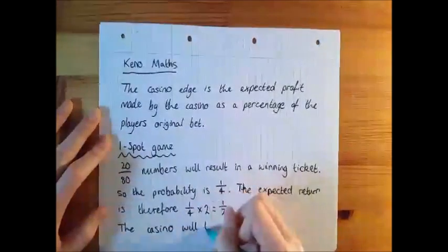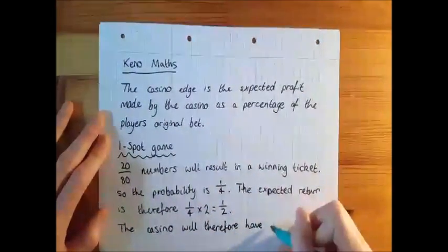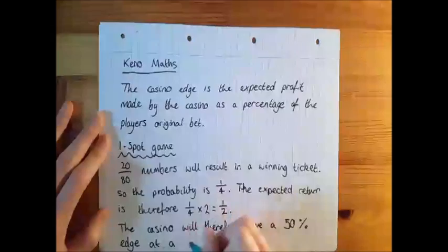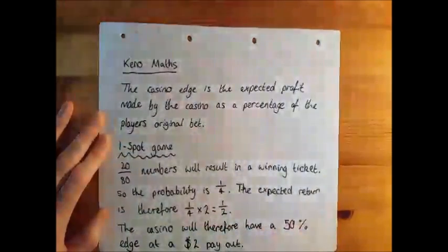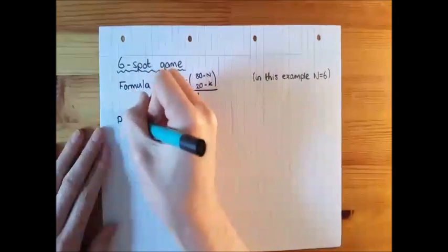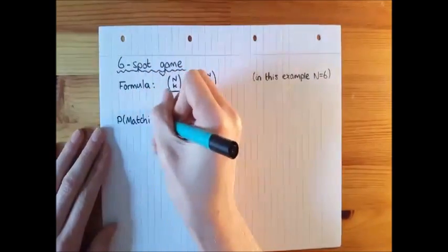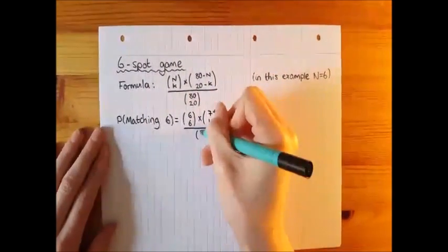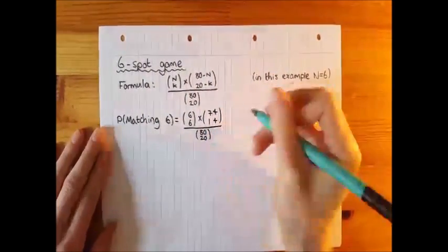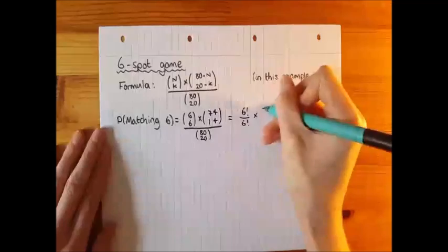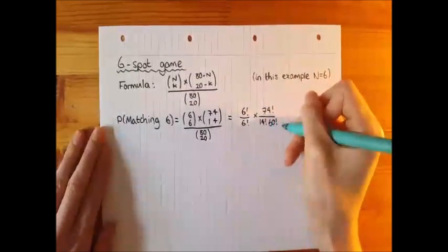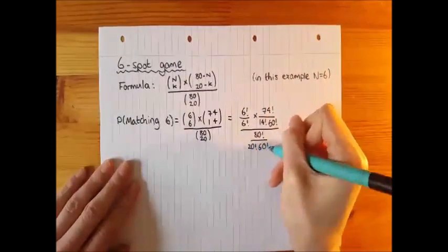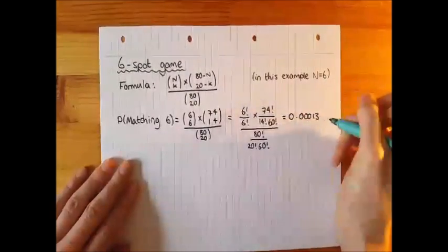For the sake of time, I will skip to a six-spot game to show you how much the odds of winning decrease. From an N-spot game, there is N choose K times 80 minus N choose 20 minus K ways to choose winning numbers, where K is the number of matches. As the computer can draw 80 choose 20 combinations, we need to divide the first calculation by this. I will therefore be using the formula shown.